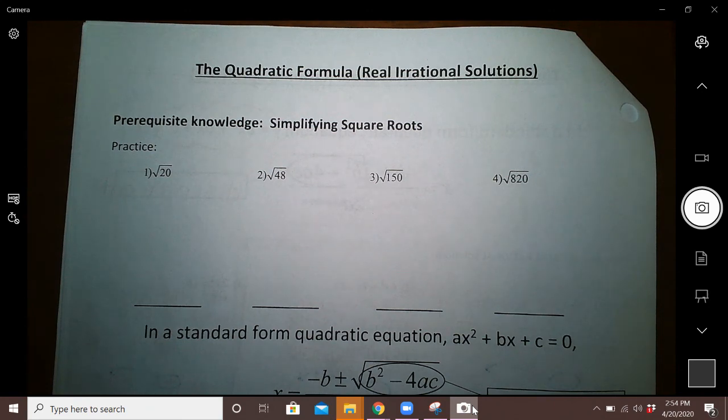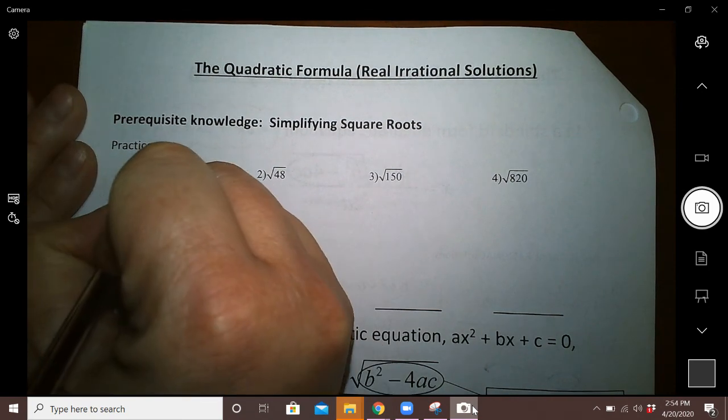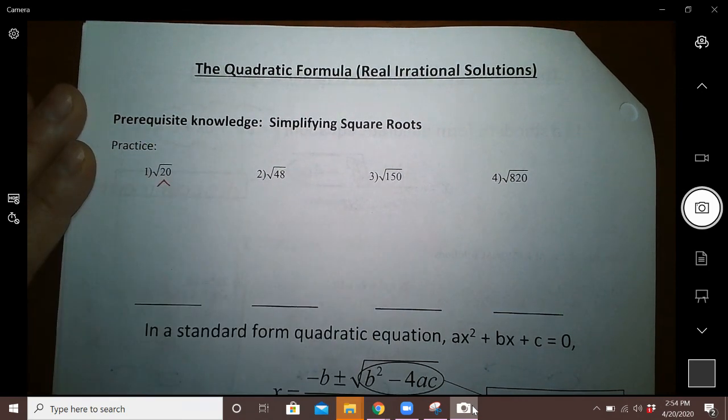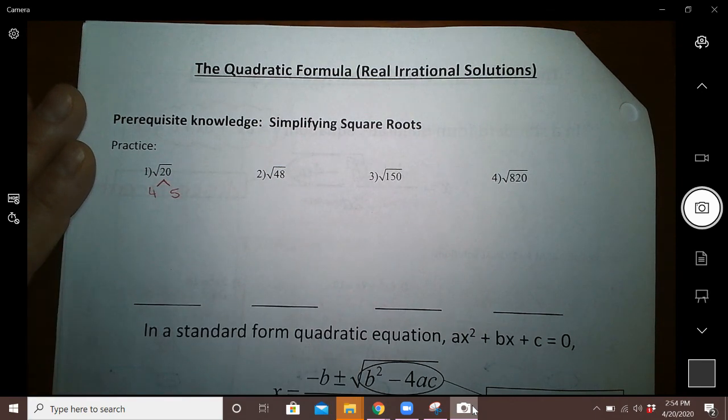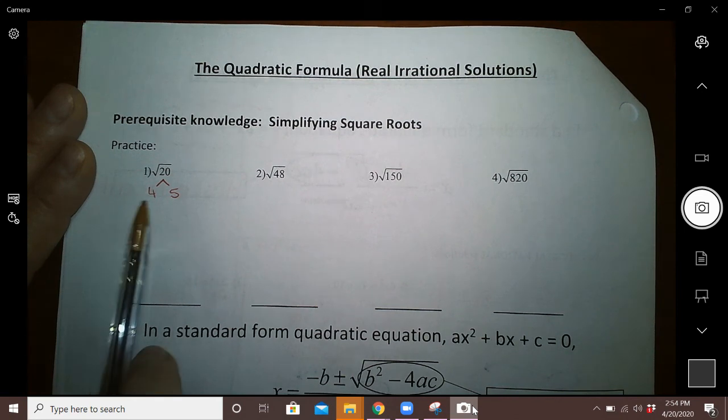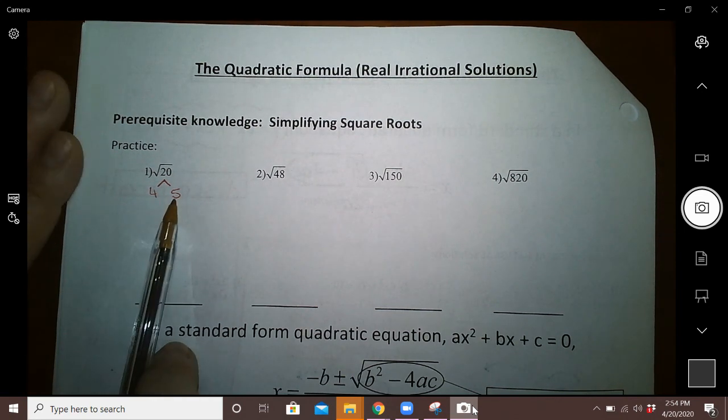In class, we use something called a factor tree to simplify radicals. So let's start with 20. I can think of two things that multiply to make 20. I could use 4 times 5. You might have been thinking 2 times 10, and 2 times 10 will work also.